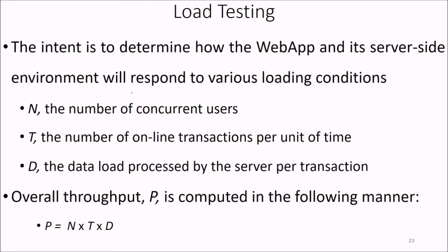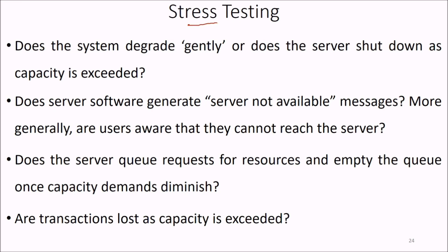In load testing, the intent is to determine how the web app and its server-side environment will respond to various loading conditions. Let N be the number of concurrent users, T the number of online transactions per unit of time, and D the data load processed by the server per transaction. Overall throughput equals N × T × D. In stress testing, key questions are: Does the system degrade gracefully or does the server shut down as capacity is exceeded? Does the server software generate a 'server not available' message? Are users aware they cannot reach the server? Does the server queue requests and empty the queue once capacity demands diminish? Are transactions lost as capacity is exceeded?